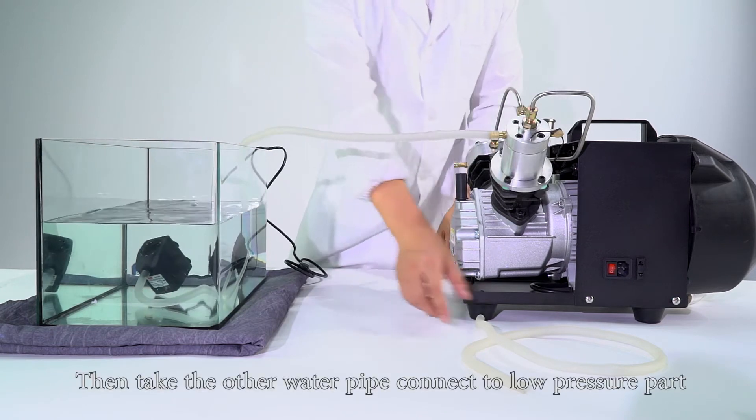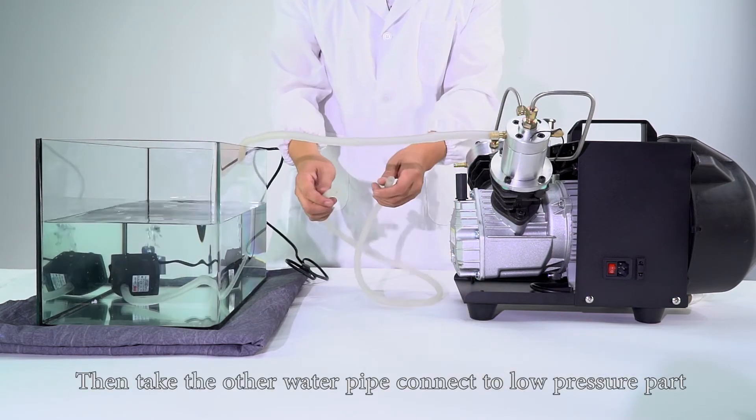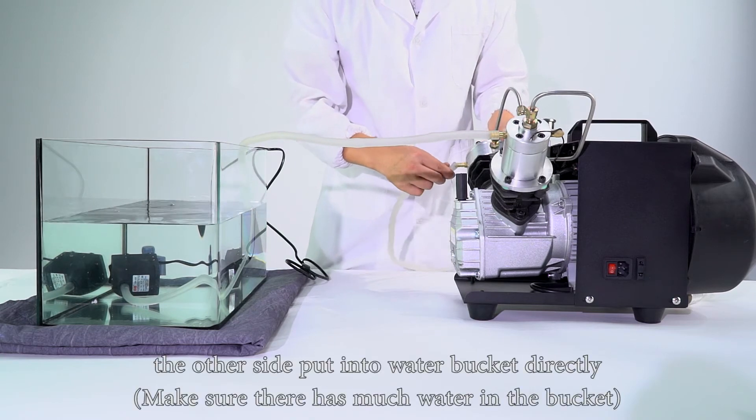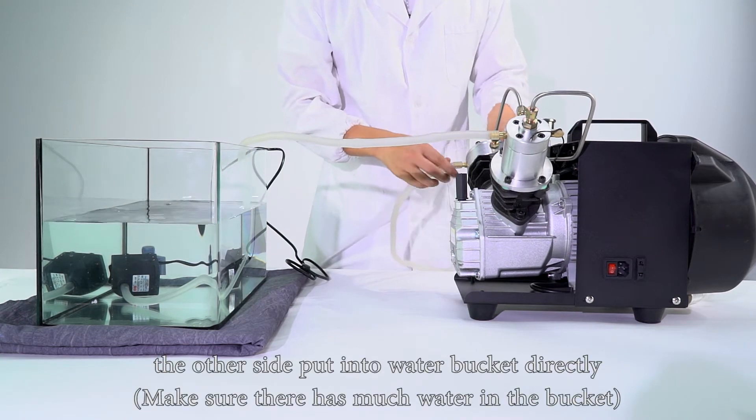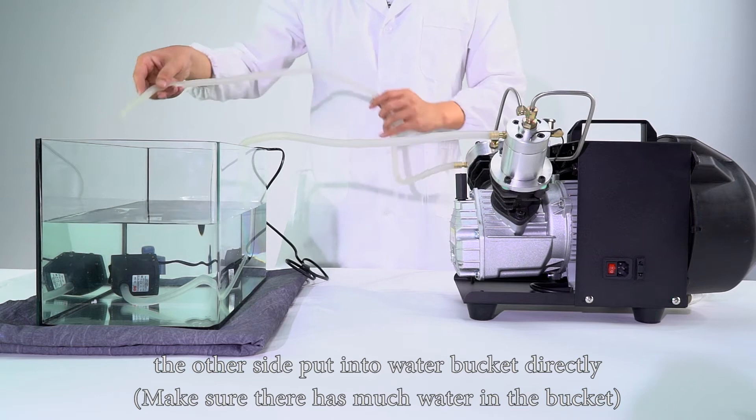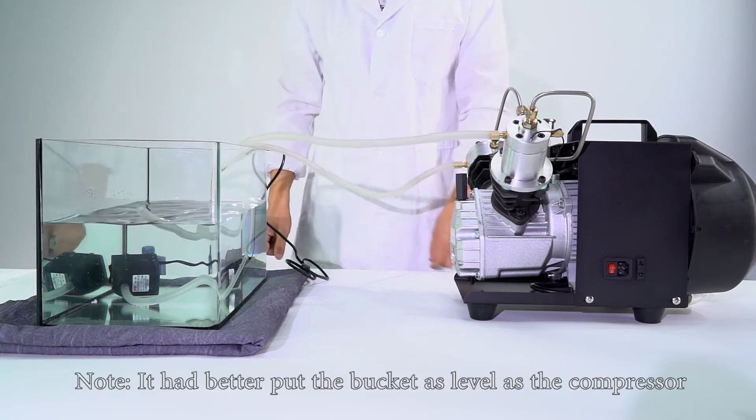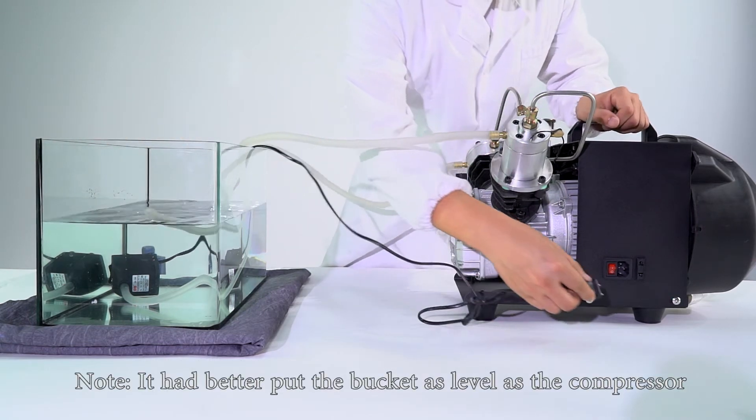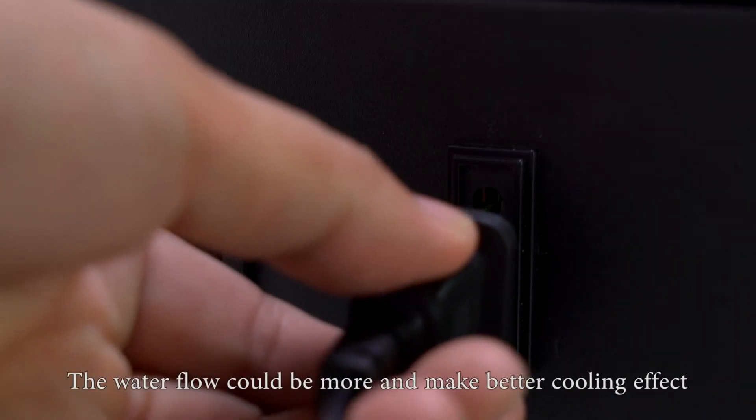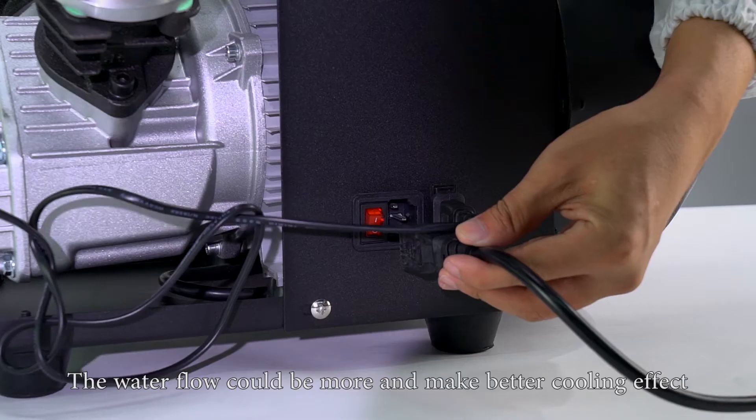Then take the other water pipe and connect it to the low pressure part. Put the other side into the water bucket directly. Make sure there is plenty of water in the bucket. Note: It's better to place the bucket at the same level as the compressor for better water flow and cooling effect.